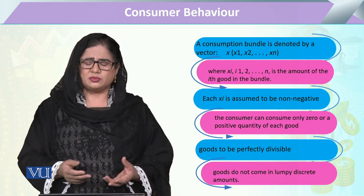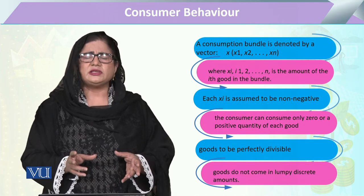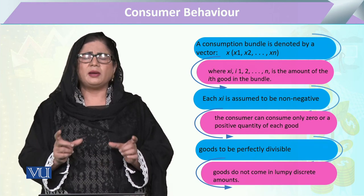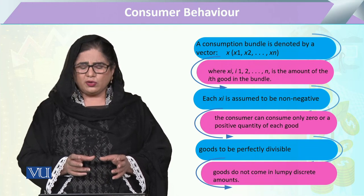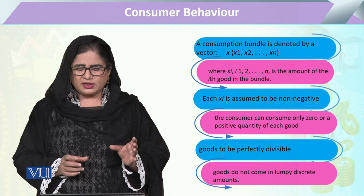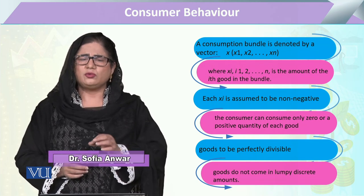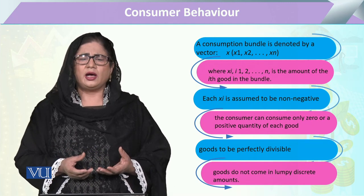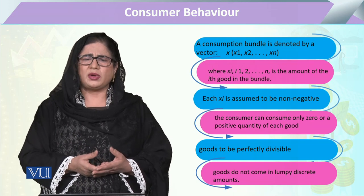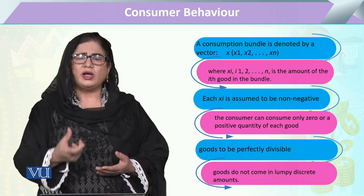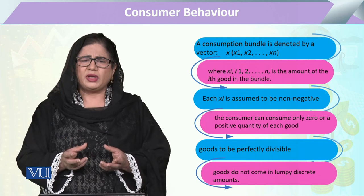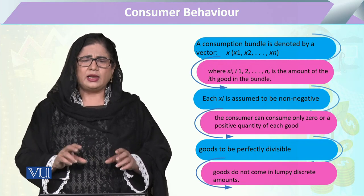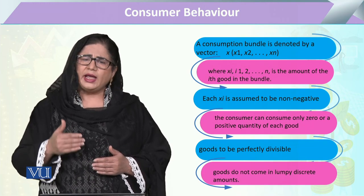Zero quantity والی commodity ہمارے consumption bundle میں نہیں ہو سکتی۔ Consumption bundle کی ایک property یہ ہے کہ quantity کو lump sum لیا جا سکتا ہے — وہ perfectly divisible ہو سکتی ہے۔ لیکن جب ہم اسے express کرتے ہیں تو ہم اسے discrete amounts میں کرتے ہیں۔ مثلاً orange کے لیے ہم کہیں گے 'one orange' یا 'one apple' — complete form میں — آدھا یا تین چوتھائی نہیں، اگرچہ وہ divisible ہے۔